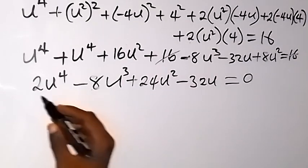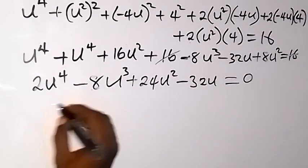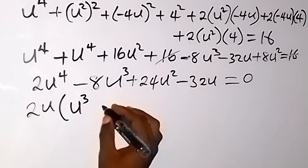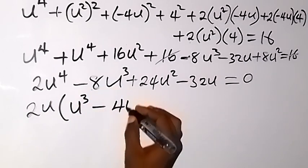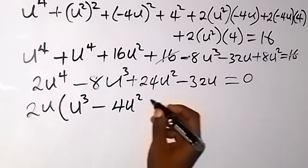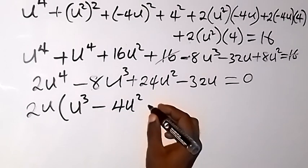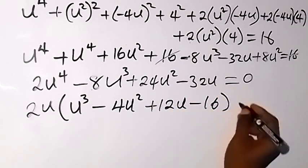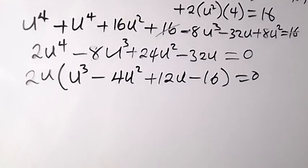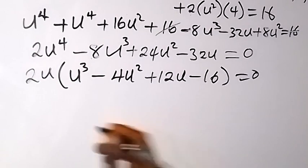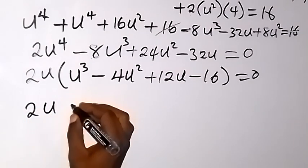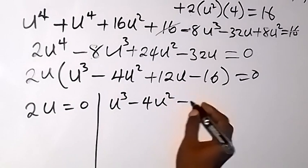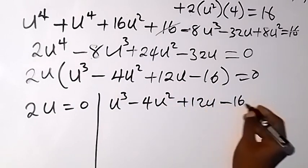From here we can factor out what is common. 2 and u are both common, so we bring out 2u. What is left is: u cubed minus 4u squared plus 12u minus 16, equals 0. So we have two cases: first, 2u equals 0; and second, u cubed minus 4u squared plus 12u minus 16 equals 0.